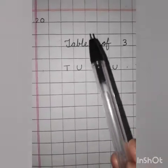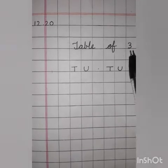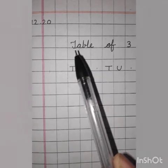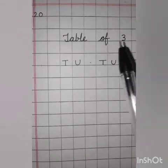In the third row, heading, table of three. First letter should be capital T-A-B-L-E, table of three.